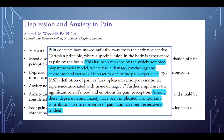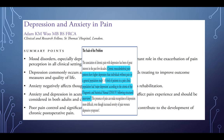Pain concepts have moved radically away from the early nociceptive Cartesian principle, where a specific lesion is experienced as pain by the brain. This has been replaced by the widely accepted biopsychosocial model, where tissue damage, psychology, and environmental factors interact to determine the pain experience. The IASP definition of pain as an unpleasant sensory or emotional experience associated with tissue damage further emphasizes the significant role of mood and emotions in pain perception.